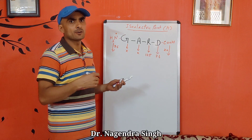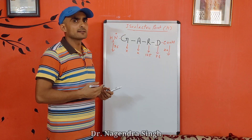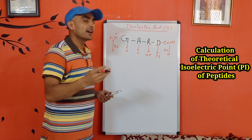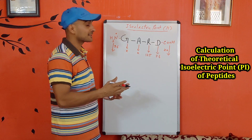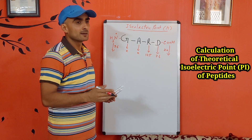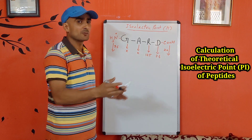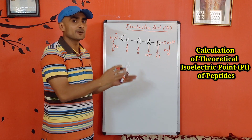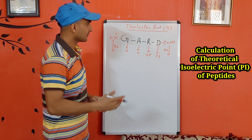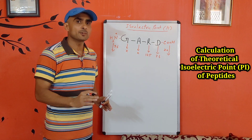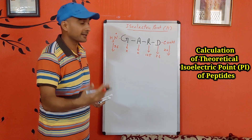Likewise, the pI of peptides can also be calculated. Similarly, pI of proteins can also be calculated, although that is called theoretical pI only, because proteins are made up of peptides and peptides are made up of amino acids, so their ionic behaviour is basically the same from amino acids to proteins. Let's take an example of a small peptide to calculate its theoretical pI value.